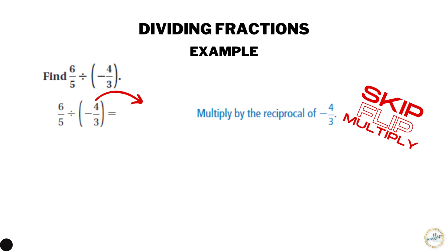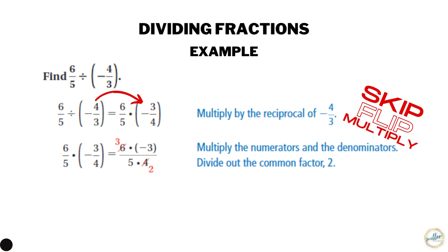We're going to flip the second number: the reciprocal of negative four-thirds is negative three-fourths. So we multiply: six-fifths times negative three-fourths. Here's a trick — before you multiply, notice that six and four are both divisible by two. Six divided by two is three, and four divided by two is two, so cross those out and change them to three and two. Multiplying straight across gives three times negative three, which is negative nine, and five times two, which is ten — so the answer is negative nine-tenths.